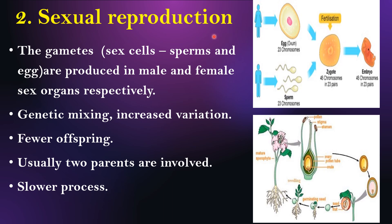Sexual reproduction is another type of reproductive method. In this type, gametes are produced in male and female sex organs respectively. Gametes, another name for sex cells — two types: sperms and egg. Sperms are produced from male sex organs; egg is produced from female sex organs. The sperm and egg fuse to form a zygote — that process is called fertilization. The fertilized zygote develops into an embryo. Genetic mixing happens here, which helps increase variation.